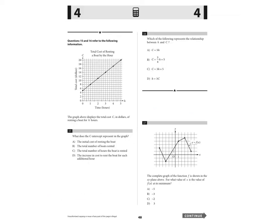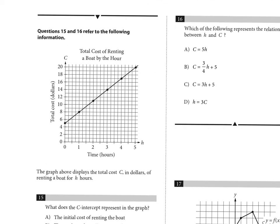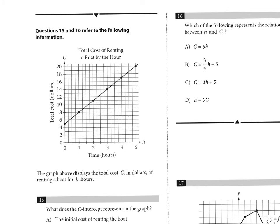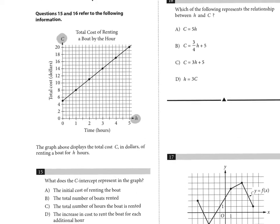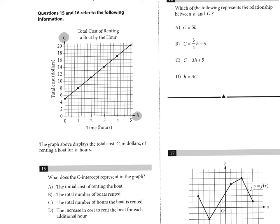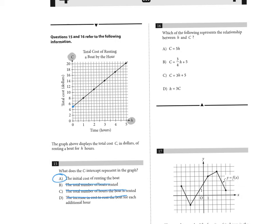Questions 15 and 16 use a graph of boat rental cost versus time. The x-axis is hours (h) and the y-axis is cost (c). Number fifteen: what does the c-intercept represent? The value of 5 on the c-axis represents the initial cost of renting the boat — you pay five dollars just to rent it, then additional amounts based on hours used. Answer choice C: the initial cost of renting the boat.